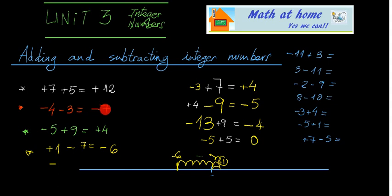Hope you have learned it. Now stop the video and try to do these operations yourself. Now, I'm going to correct them. Minus 11 plus 3: the solution is negative 8. And 3 minus 11 is the same as minus 11 plus 3 — it's the same operation, just a different order. The solution is the same.